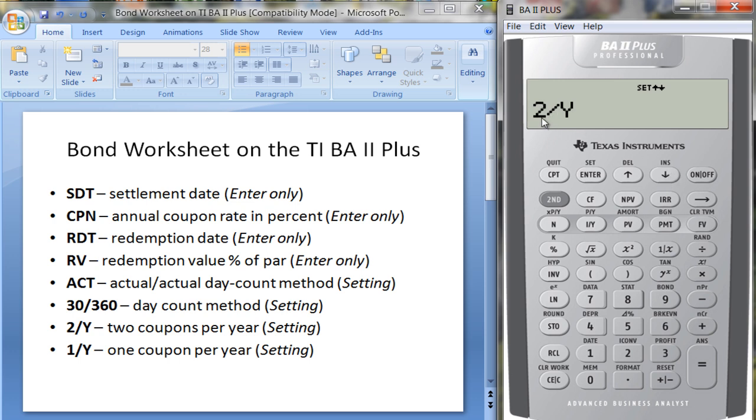The down arrow key tells me I have 2/Y here, which means two coupons per year. But if I wanted to change it, it tells you up here 'set'—you hit second enter, second set, and you can change it to one coupon per year. We'll leave it at two.